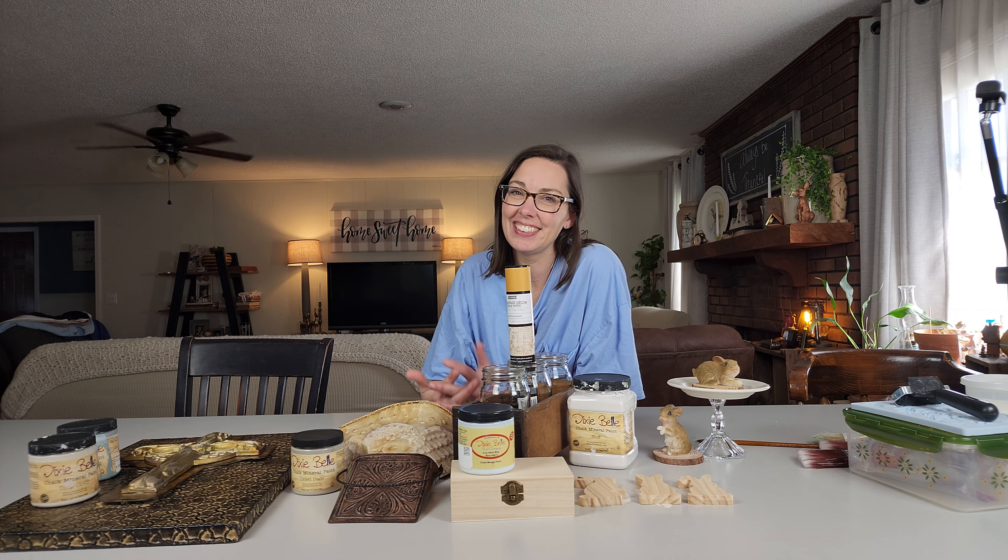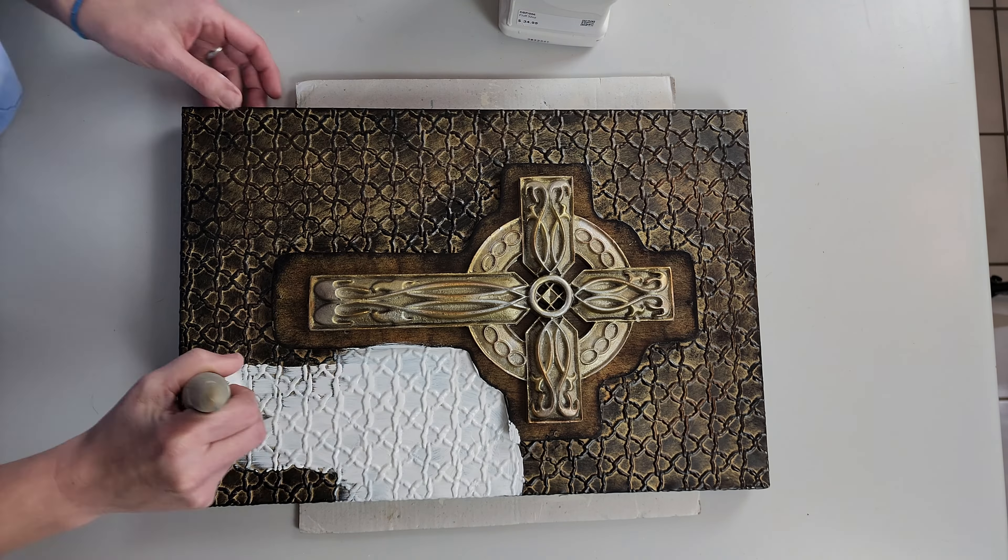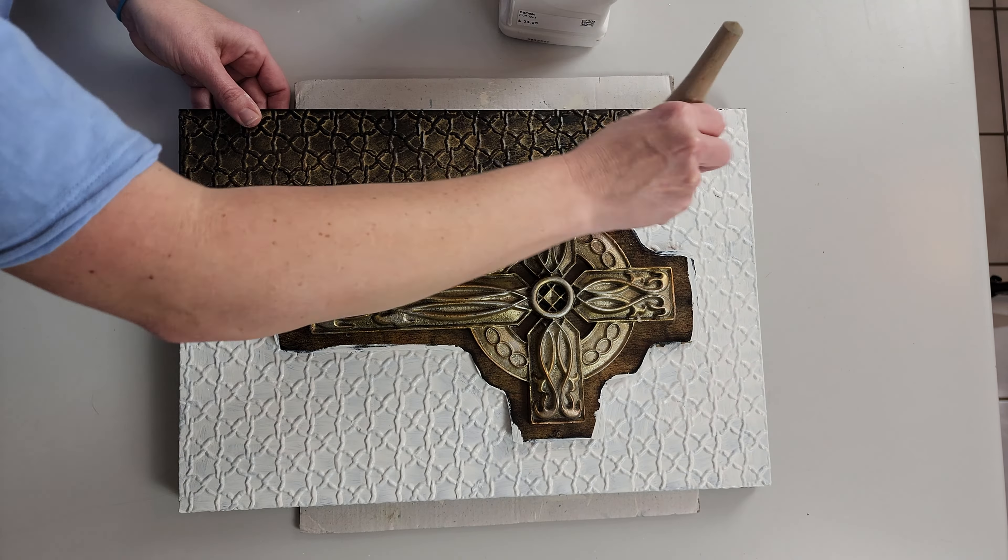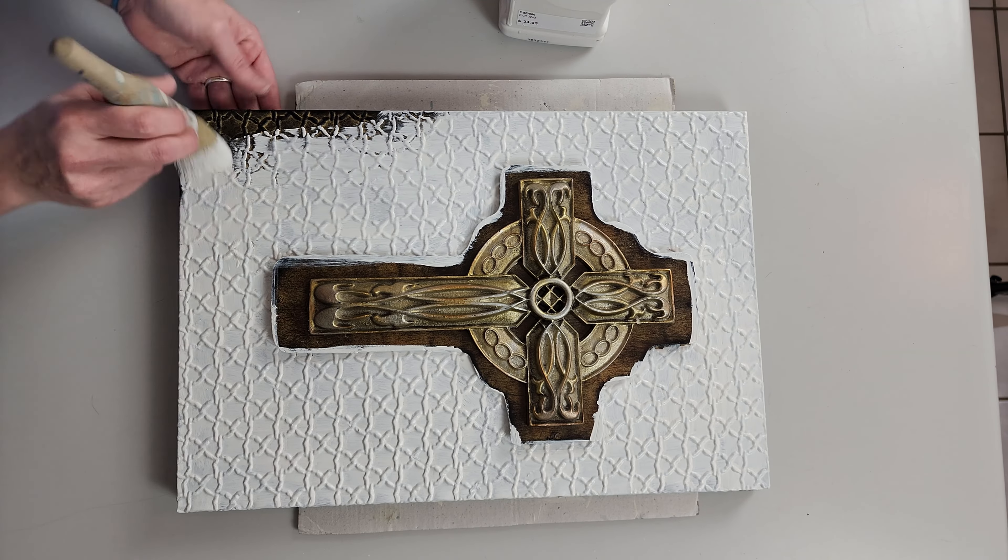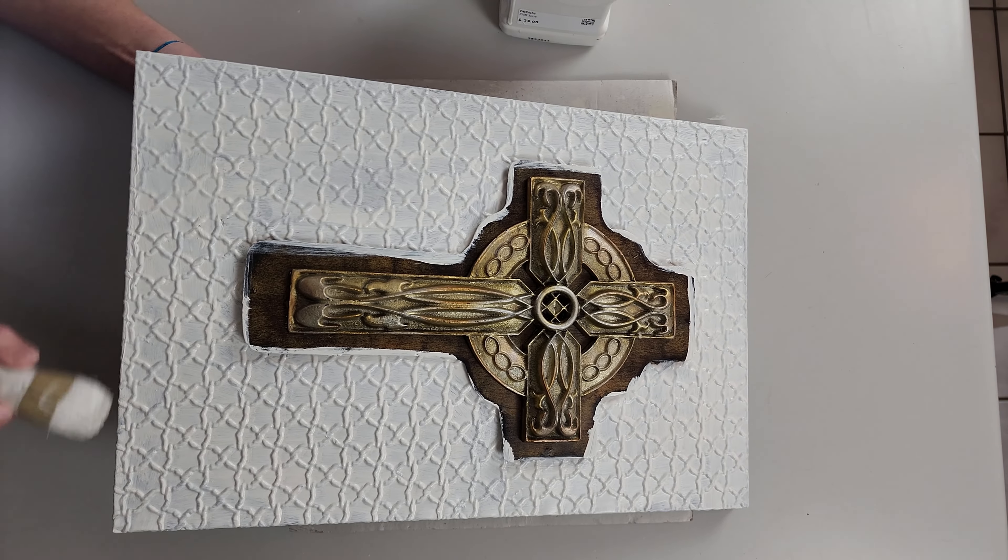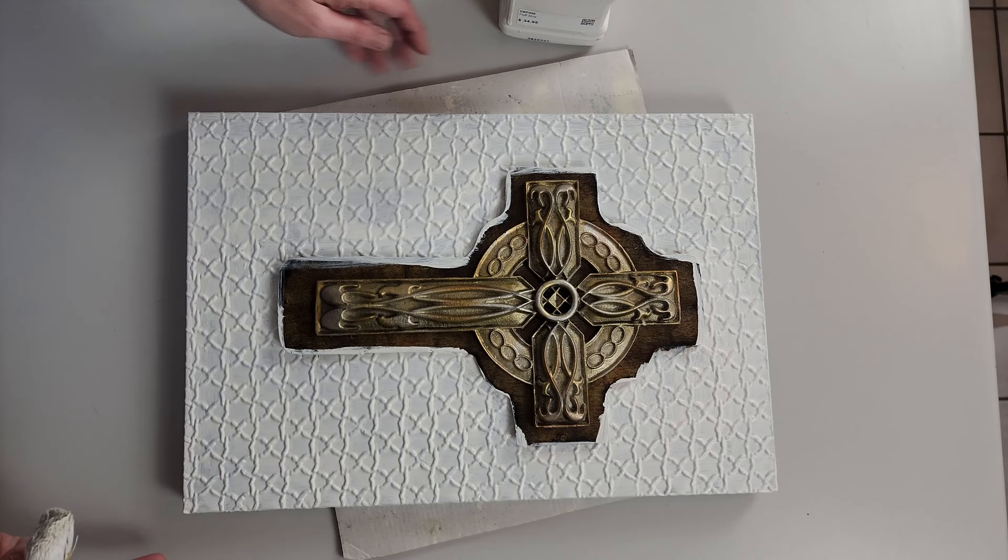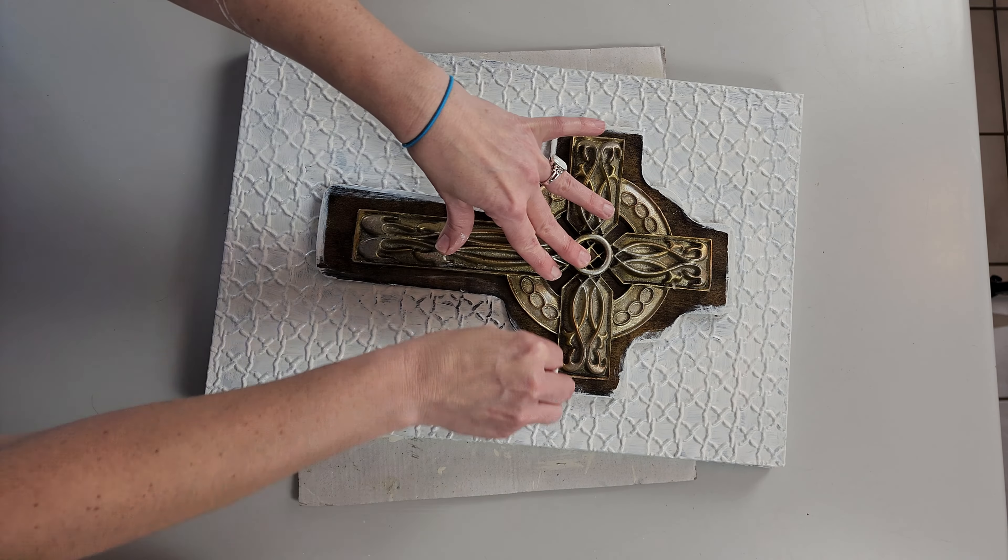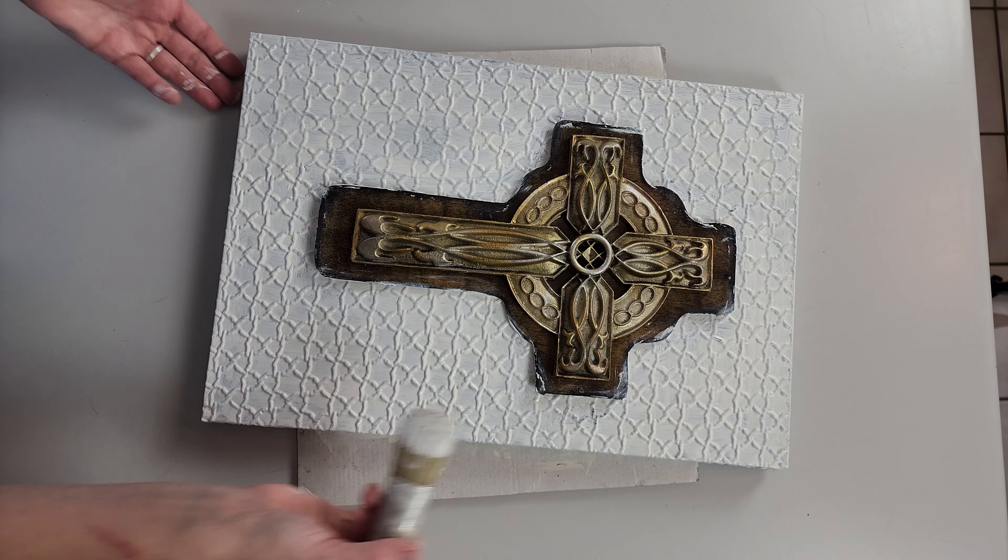Okay, so I have this metal cross picture hanging thing. I'm going to give it a coat of fluff and then I did two things here. I went around and did the outside in fluff, and then I was like oh, I'm gonna do this outline right here in vintage duck egg.